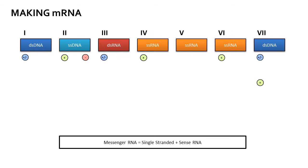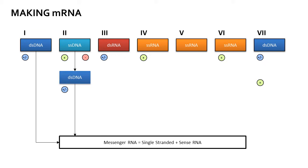Making messenger RNA: we know that double-stranded DNA can make messenger RNA directly. Single-stranded DNA requires conversion to double-stranded DNA to make the messenger RNA. Double-stranded RNA can be used as a template to make messenger RNA in a similar way that double-stranded DNA does, but this uses an RNA-dependent RNA polymerase instead of a DNA-dependent RNA polymerase like in our cells.